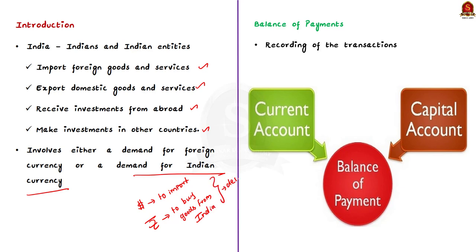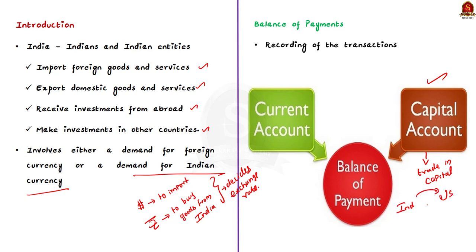By the same logic, other countries need Indian currency to buy goods from India or to invest in Indian stock exchanges. The interplay of these transactions decides the exchange rate of the rupee vis-à-vis the foreign currency. Recording of these transactions is called Balance of Payments, or BOP. The BOP has two parts. One is the capital account, which includes all types of trading in capital — that is, all investments inside and outside of the country, such as an Indian firm investing in the US or an Indian buying stocks in an American exchange.